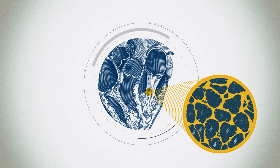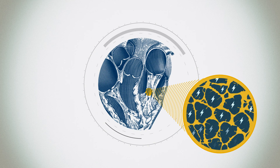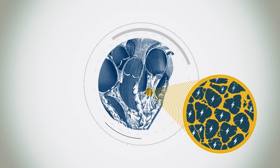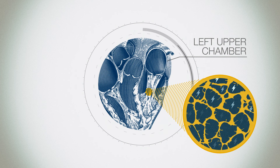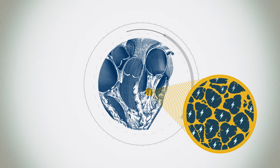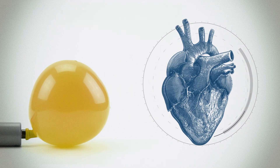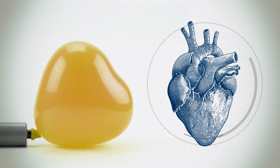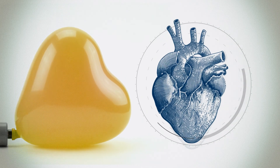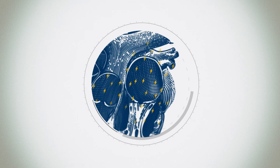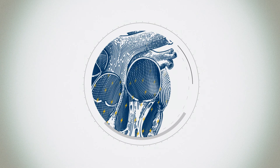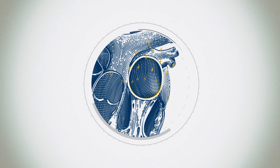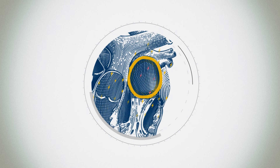Atrial fibrillation causes changes in the heart. It tends to form in the left upper chamber, or left atrium. When the pressure on the left atrium is too high, it expands just like a balloon that's overinflated. The body grows scar tissue into the walls of that chamber to reinforce it and to protect it against further expansion.